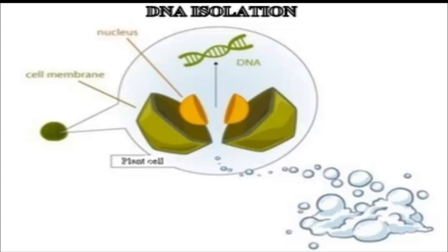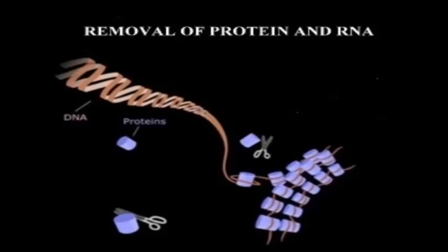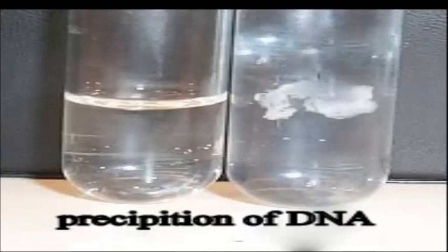There are three steps in the DNA isolation. First one is breakage of cell wall. Second one is removal of protein and RNA. Last step is precipitation of DNA. By doing so, we separate the DNA from other cell components.